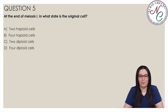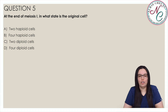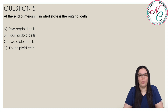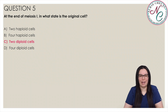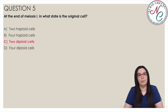At the end of meiosis 1, in which state is the original cell? Is it A, 2 haploid cells; B, 4 haploid cells; C, 2 diploid cells; or D, 4 diploid cells? The correct answer is C, 2 diploid cells. At the end of meiosis 1, the chromosomes have crossed over and then migrated to the poles. Nuclear membranes have formed around the DNA, creating 2 diploid cells with 64 chromosomes.